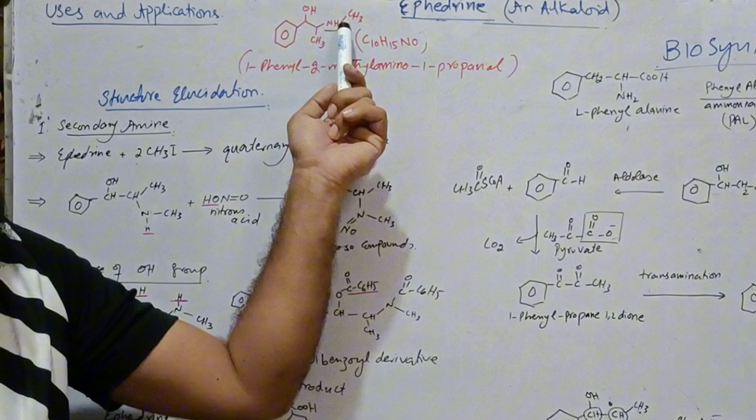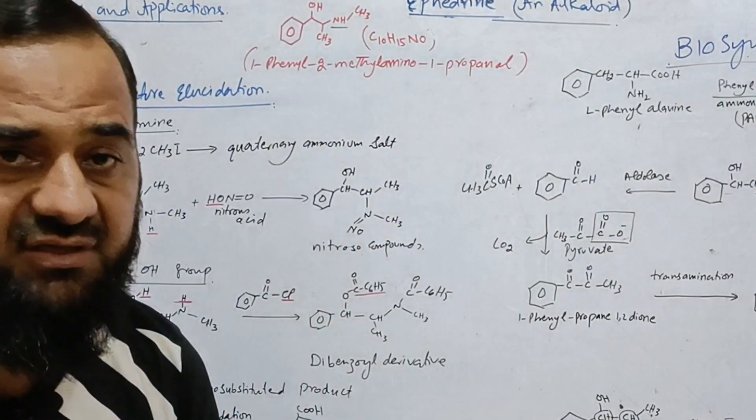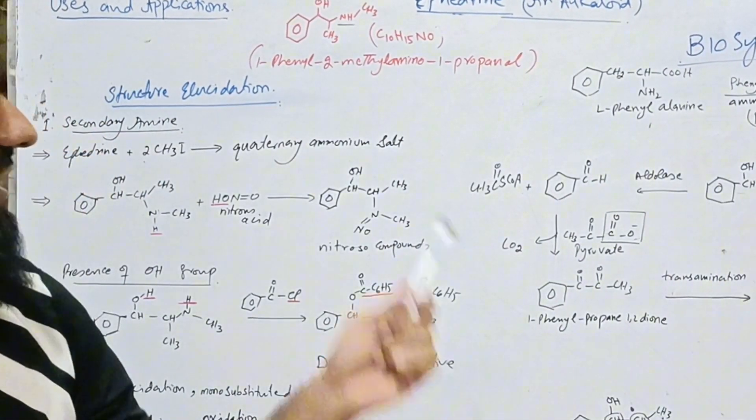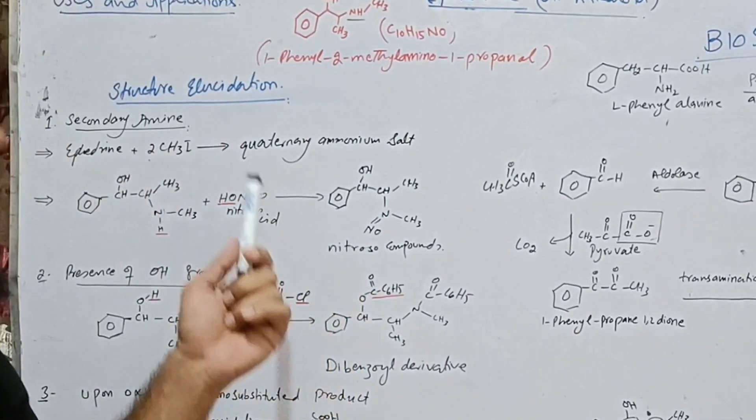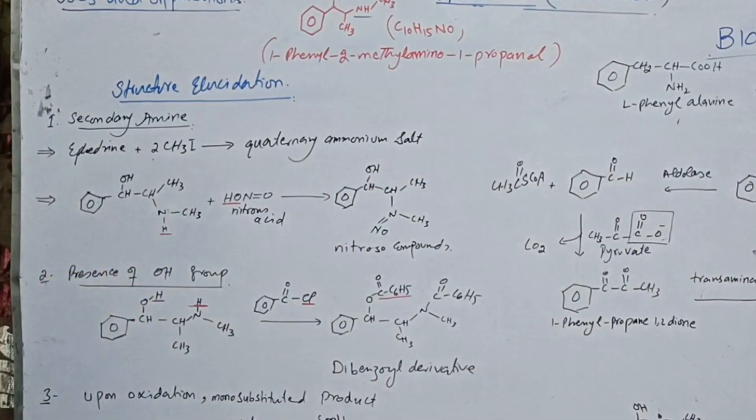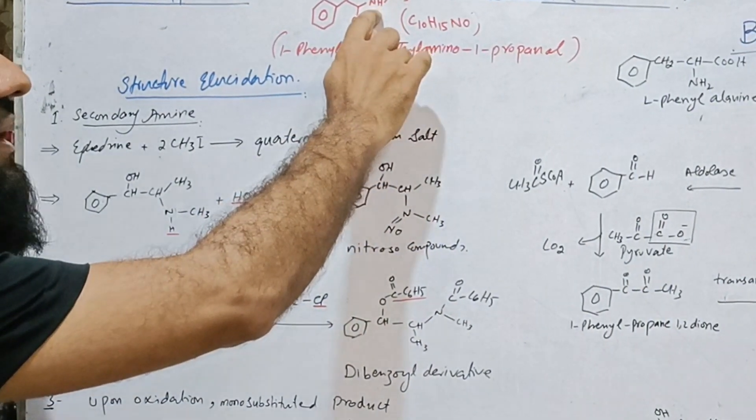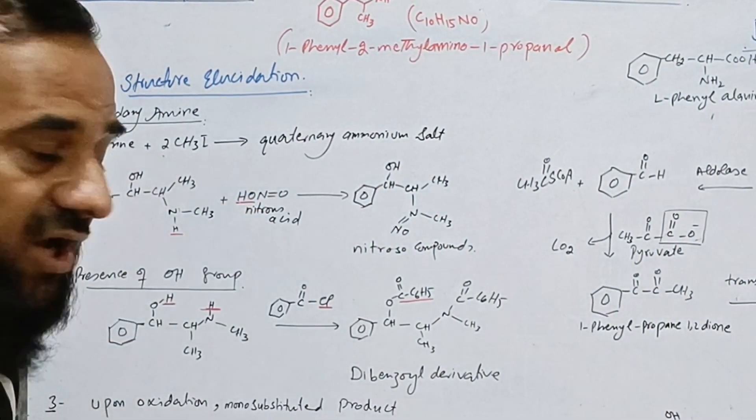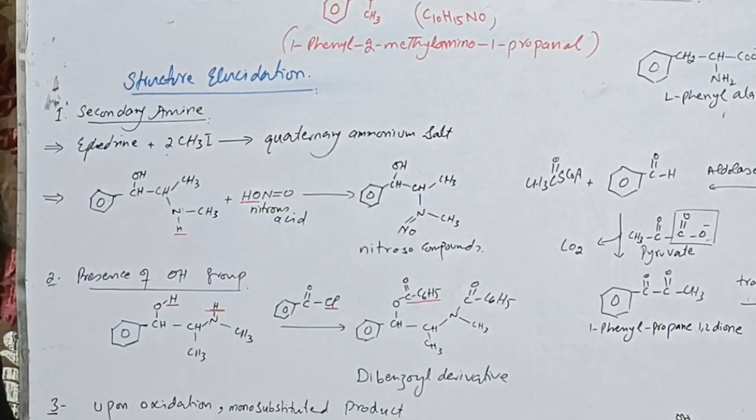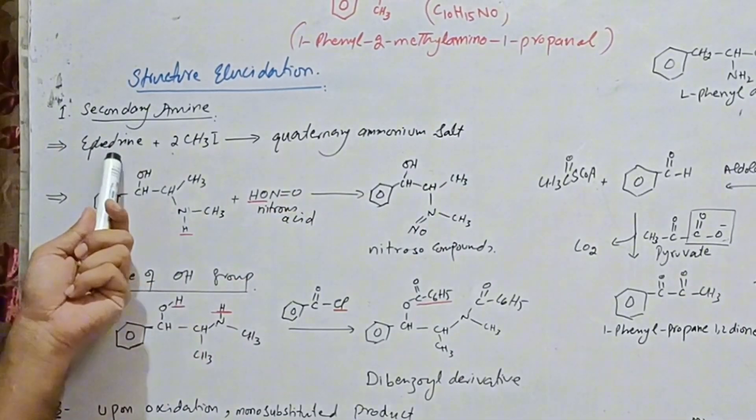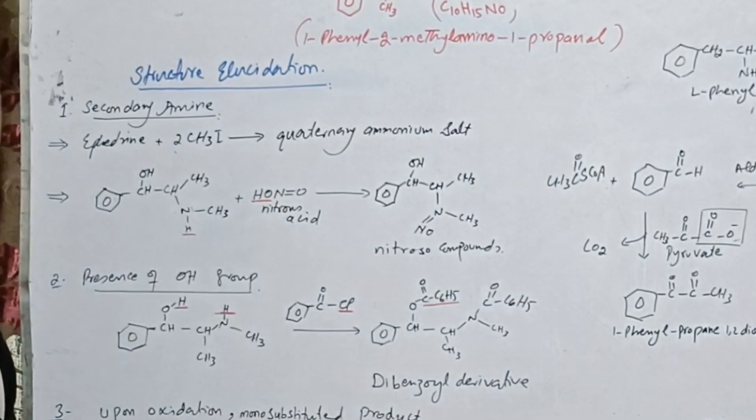So how this structure was confirmed? Let us discuss the structural elucidation of ephedrine. As we see the structure, there is an amino group and this is a secondary amine. How we can check that this is a secondary amine? When we add methyl iodide,